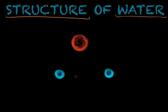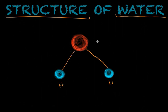What I want to illustrate here is that water is comprised of two hydrogen atoms and they're both bound to this large oxygen. What happens, and it's very important to know, is that oxygen has high electronegativity, meaning that it's able to attract electrons to its core.